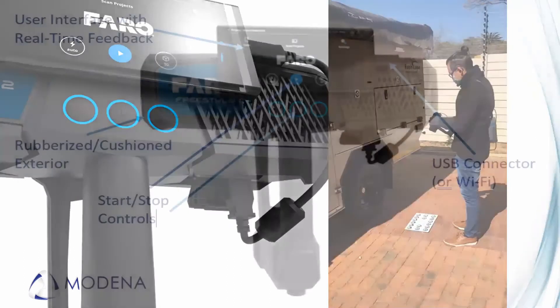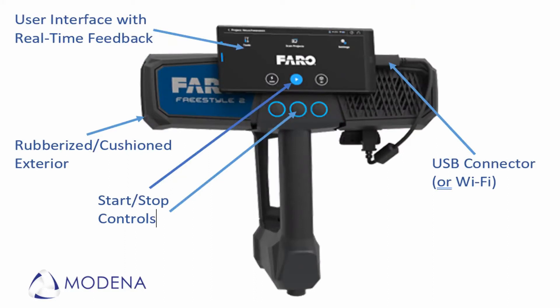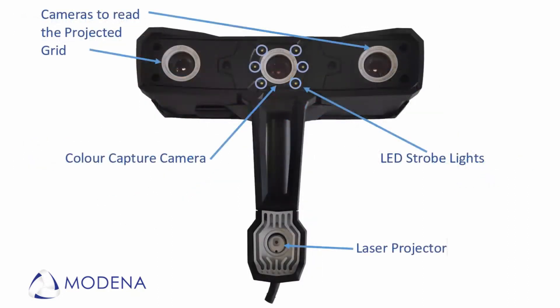How the scanner works: you have the phone for the user interface, and the scanner has a nice rubber coating. It has start and stop controls on the phone and also on the Freestyle itself. You can connect the phone to the Freestyle using USB tethering or via Wi-Fi. The Wi-Fi connection works great if you need to scan, for example, the top of the roof of a car and you cannot get on a ladder — you can hold the phone in your hand. On the sides are two cameras that capture the grid, an integrated color camera in the middle to capture the frames, and six LED strobes to illuminate the scene.